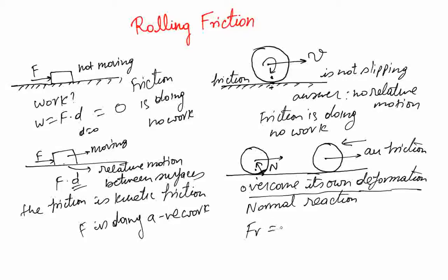If rolling friction is Fr, then it's represented as, again, similar to static and kinetic friction. Fr is μN, but μ is called the coefficient of rolling friction.